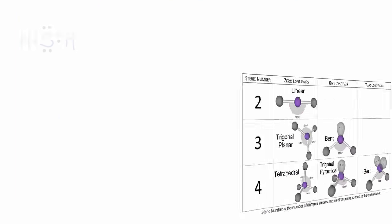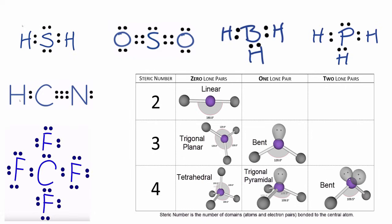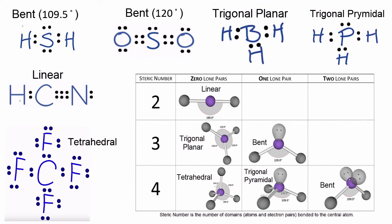Time for some more practice — that's the cornerstone of learning. I've given you these Lewis structures and you need to find the molecular geometries. Try to envision how the atoms and lone pairs are spreading out before you go to the table to check the molecular geometry. Pause and try to figure out the shape of these molecules. For the ones you had problems with, go back earlier in the video and look at that particular molecular geometry to figure out where the confusion lies.